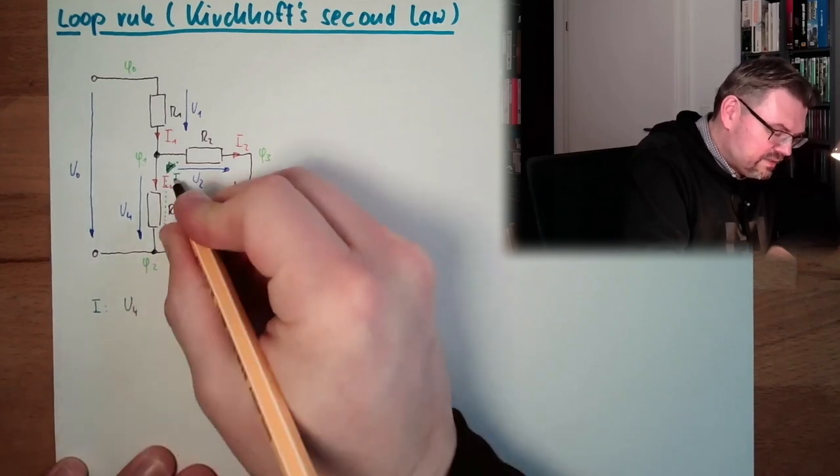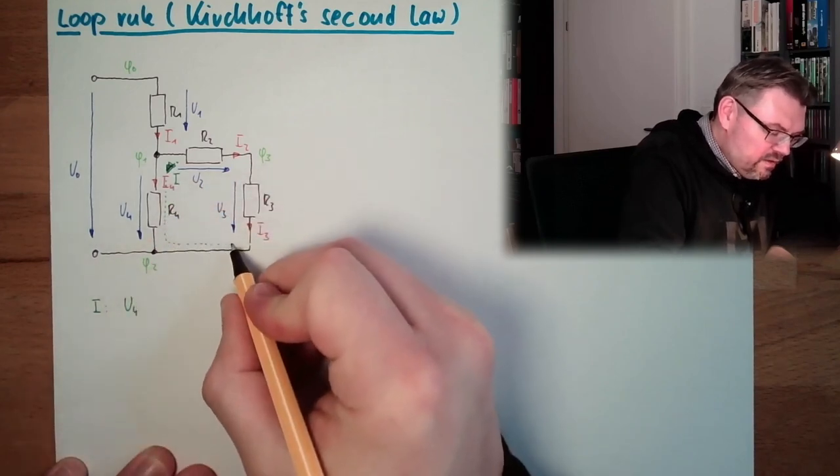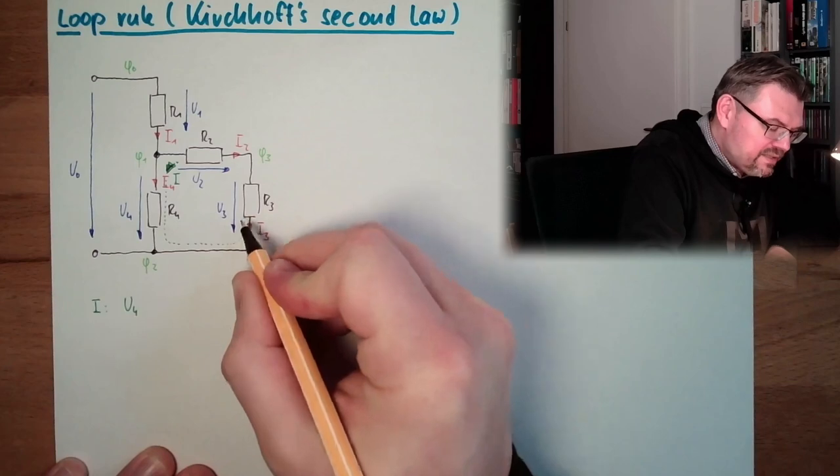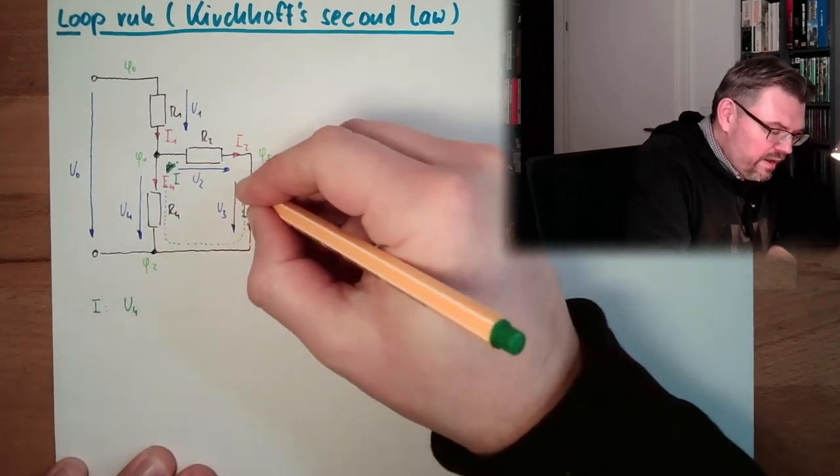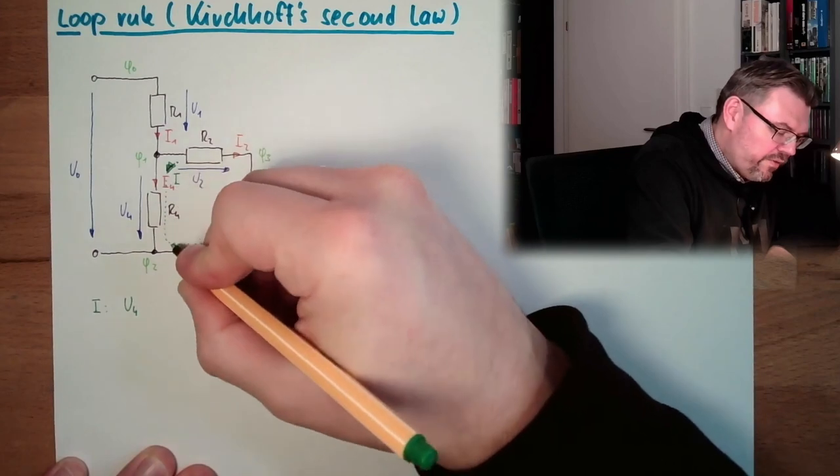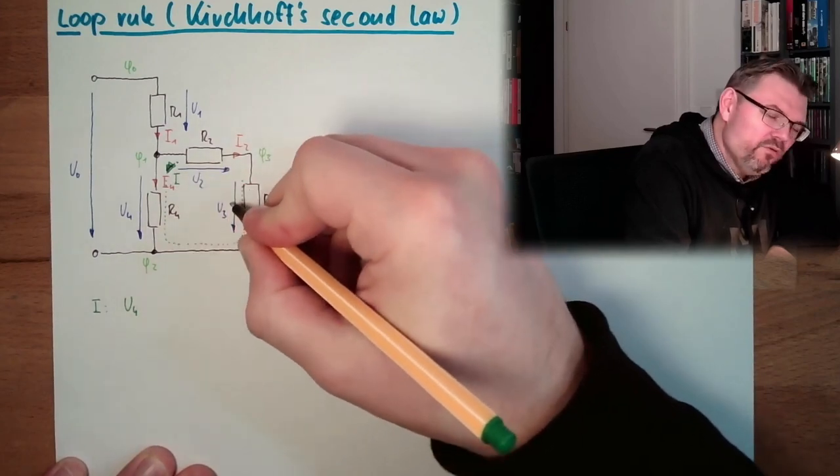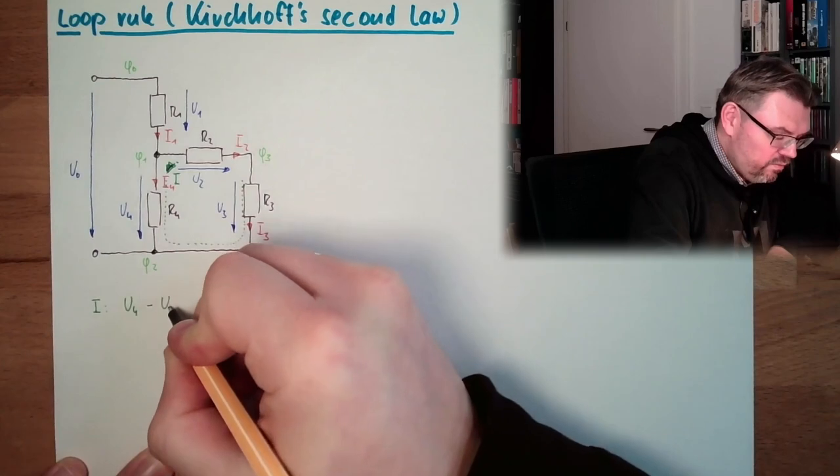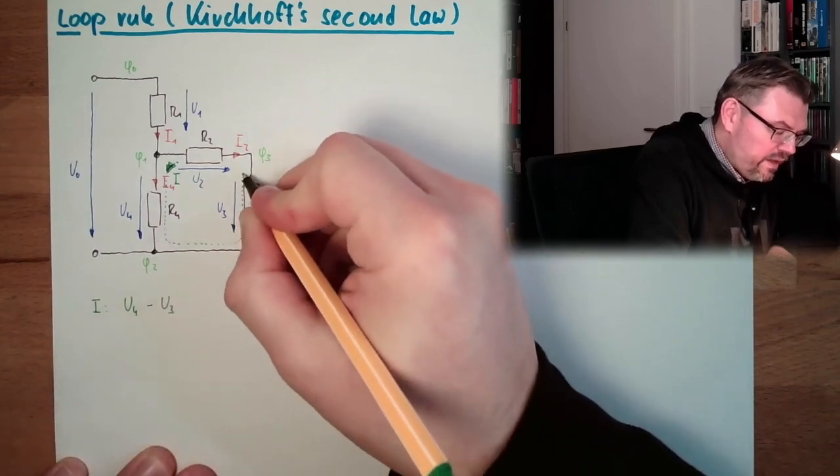I'm summarizing all voltages, so all potential differences on my way through the network. From here going here, the first one I am passing is U4. U4 is in the same direction as my direction of the loop, so it is called U4 plus. And here we are passing now U3, but it's in the opposite direction, so we have minus U3.